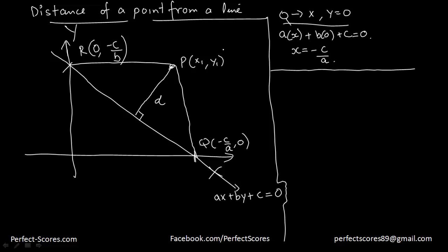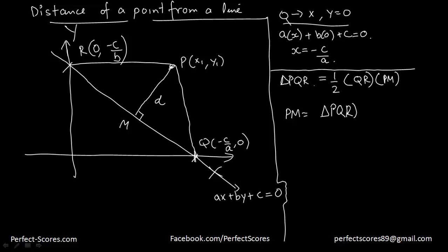Now what we have here is a triangle PQR. If we want to find the area of triangle PQR, the area equals half into the base QR times the height PM. We are interested in finding PM, so PM is going to be equal to the area of PQR times 2 divided by QR.